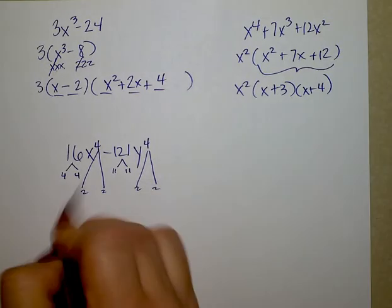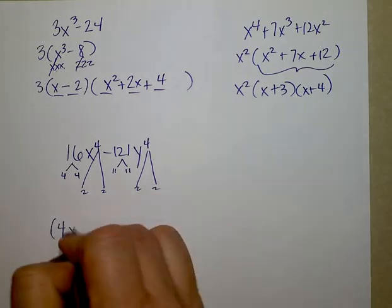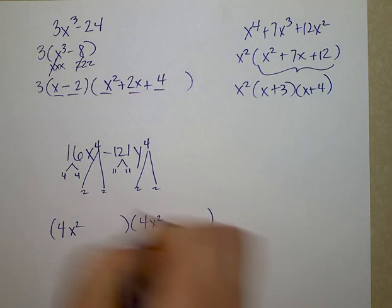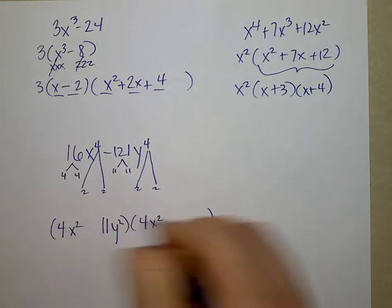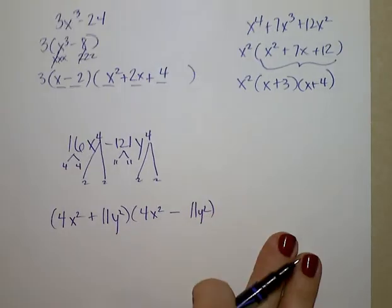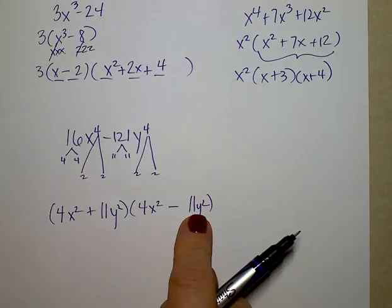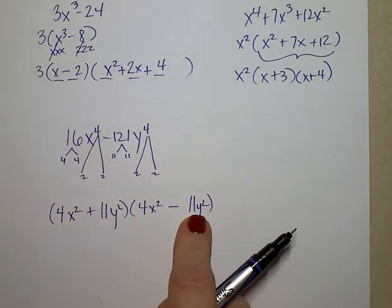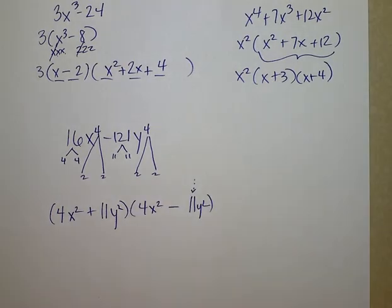So this becomes 4x squared, 4x squared, and 11y squared, and 11y squared. One is positive, one is negative. A lot of students want to take this portion and go further. There's only one reason why you can't and it's because 11 is not a perfect square. This is your final answer.